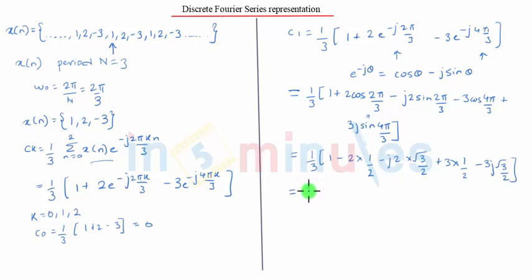Further solving, we get 1 by 3 into bracket [3 by 2 minus j √3 by 2]. Simplifying again, we get half minus j √3 by 6, that is half minus j 1.443.